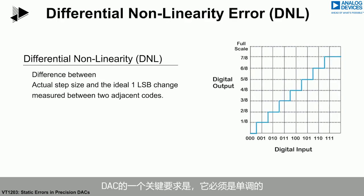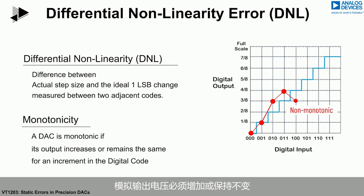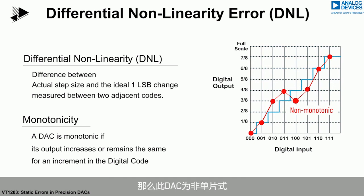A key requirement of a DAC is that it is monotonic. This means that the analog output voltage should increase or remain the same as the DAC's digital code increases. If the output of a DAC decreases as the digital code increases, the DAC is said to be non-monotonic.